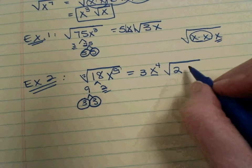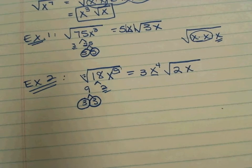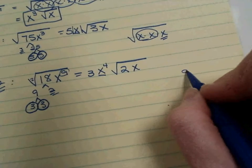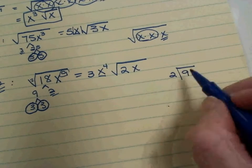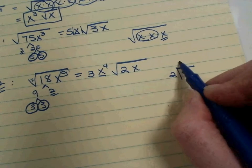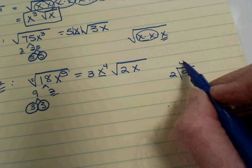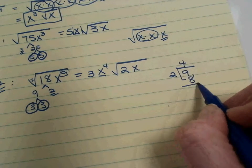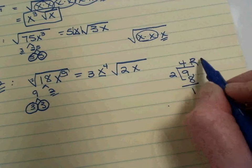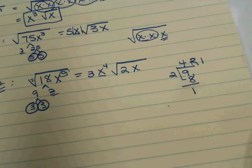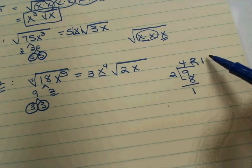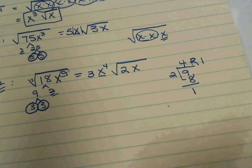So that 1 left over stays underneath. So it's kind of like long division. Doing it in your head. 2 goes into 9 4 times. And then 4 times 2 is 8. Subtract the 8. We have a remainder of 1. So the remainder is like our left over. It's the one that stays underneath.